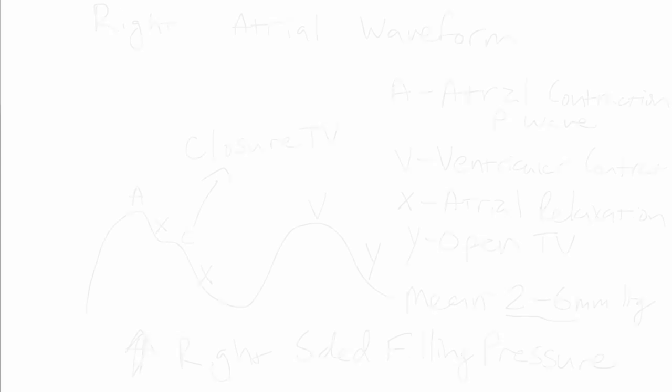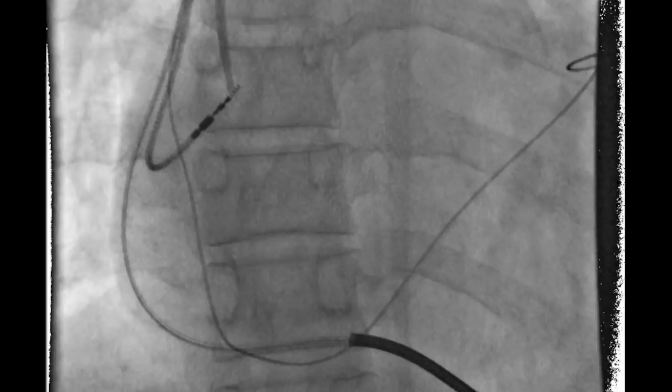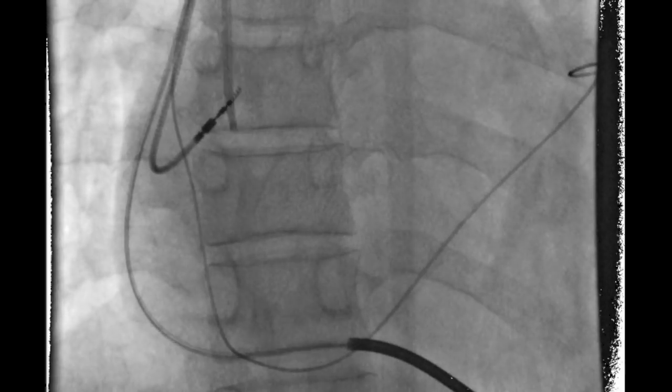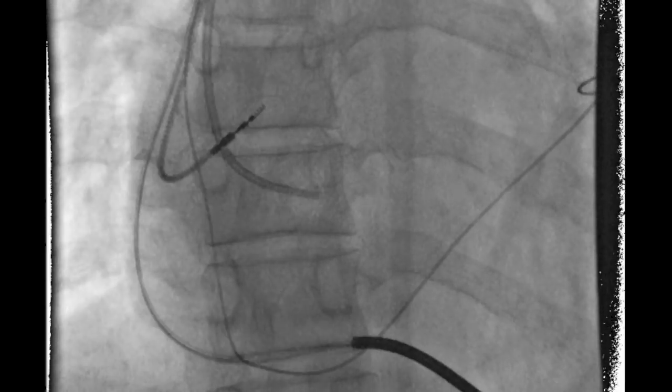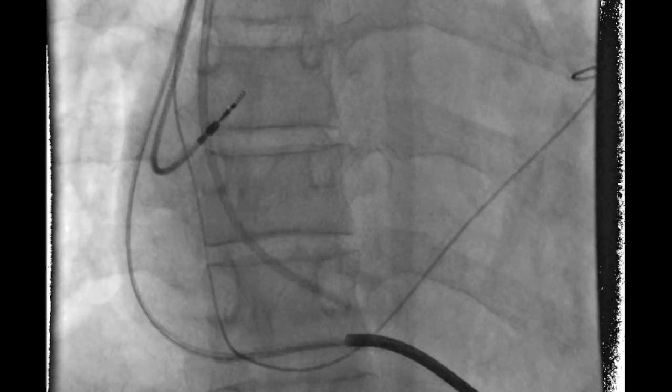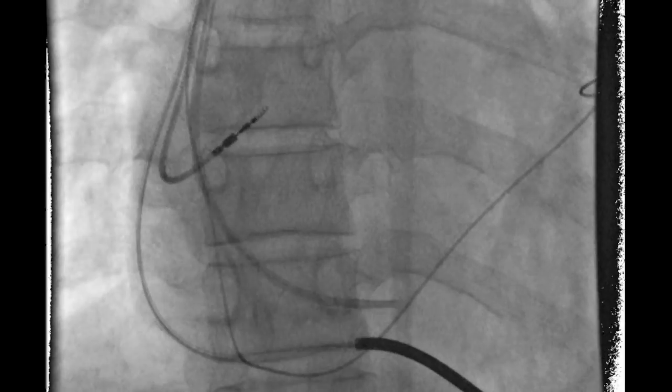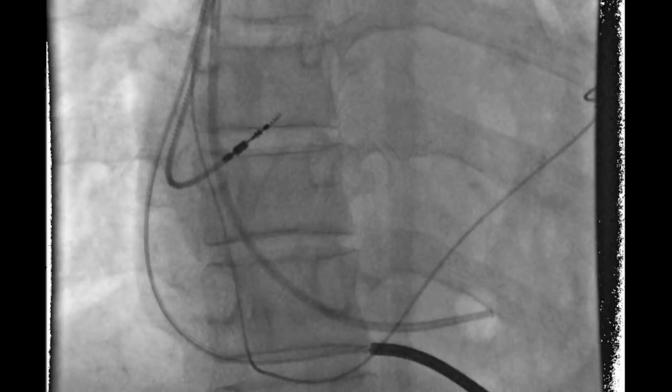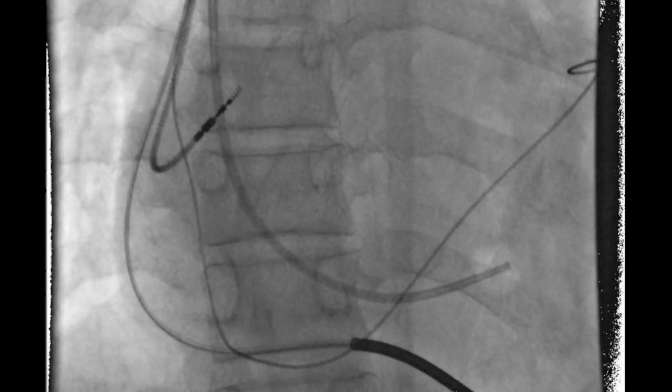If you're in the cath lab, you'll see under fluoroscopy the tip of the catheter move from the right atrium to the right ventricle, and you'll see the corresponding pressure waveform change. However, if you're doing this at the bedside such as in the CCU, all you'll have to go by is the pressure changes, so it's important to know what to look for to know when you've moved from the right atrium to the right ventricle.